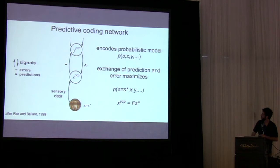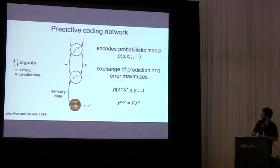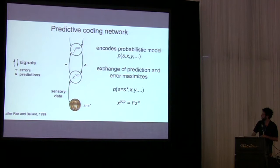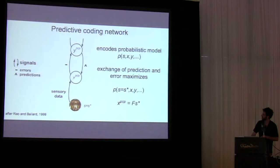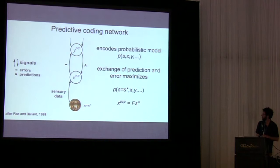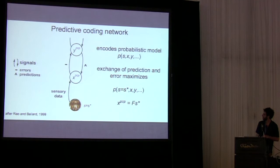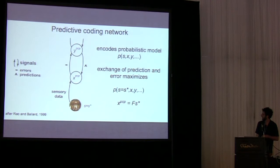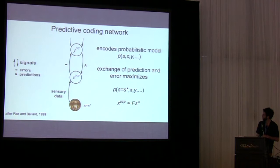Consider a predictive coding network which encodes a probabilistic model — namely a joint distribution over a set of visual features X and Y. Each node in this network is associated with one of the visual features. There are descending connections which communicate predictions based on prior information of what the feature value should be, and ascending connections which communicate the error of those predictions. By a dynamic exchange of these errors and predictions, the model determines the set of visual features most probable when the sensory node is set to a particular image S*. In the linear Gaussian case, the state it converges on is just a filtered version of the stimulus presented.